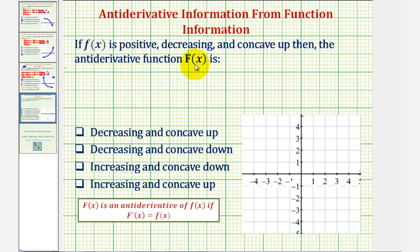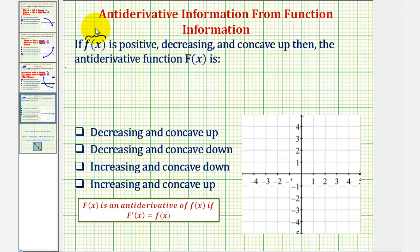Let's begin by reviewing the definition of the antiderivative function. Big F of x is an antiderivative of f of x if big F prime of x equals f of x. Since big F prime of x equals f of x, when we're given information about f of x, we can think of this as information about big F prime of x.